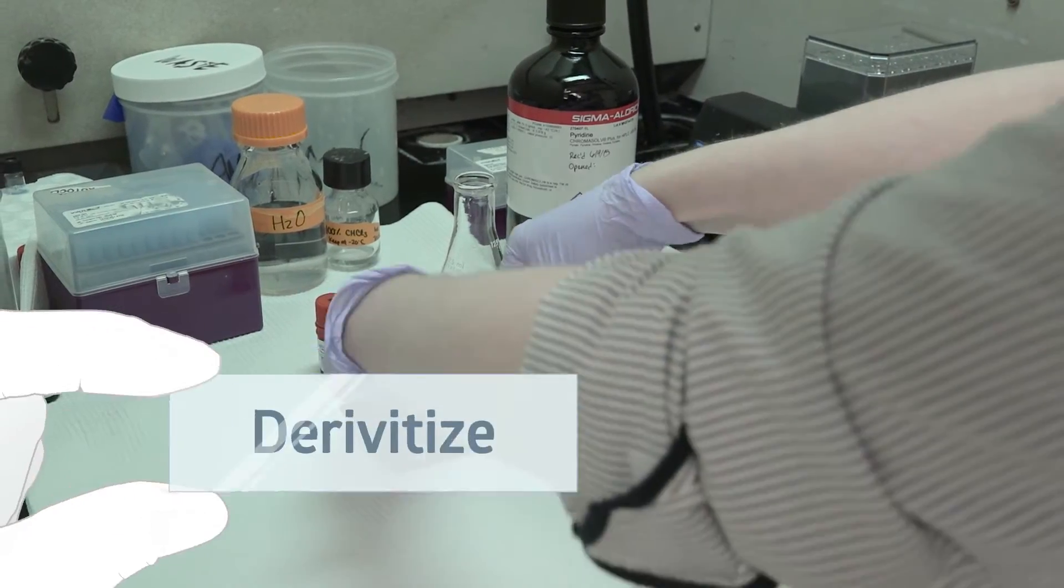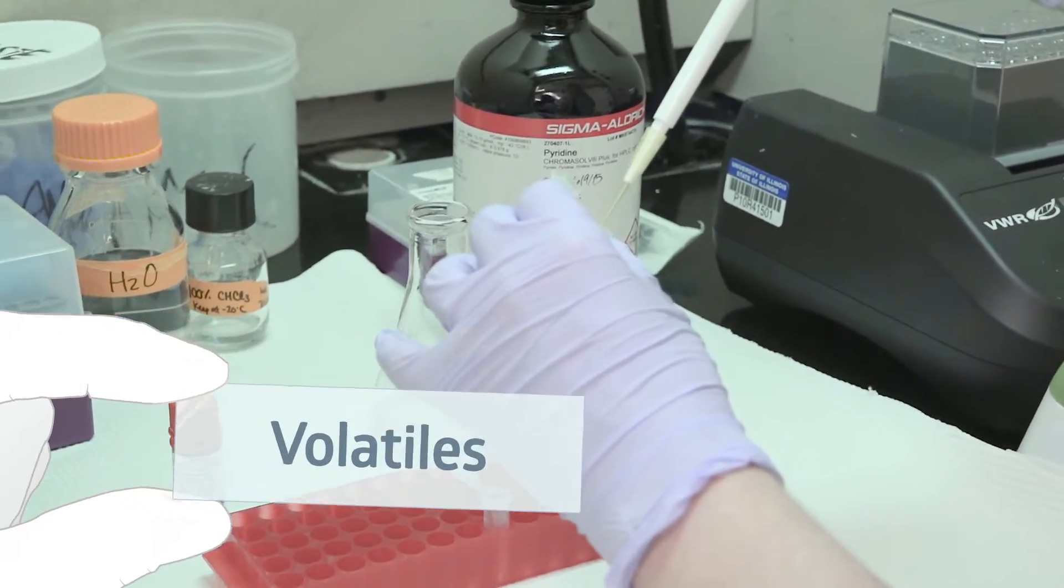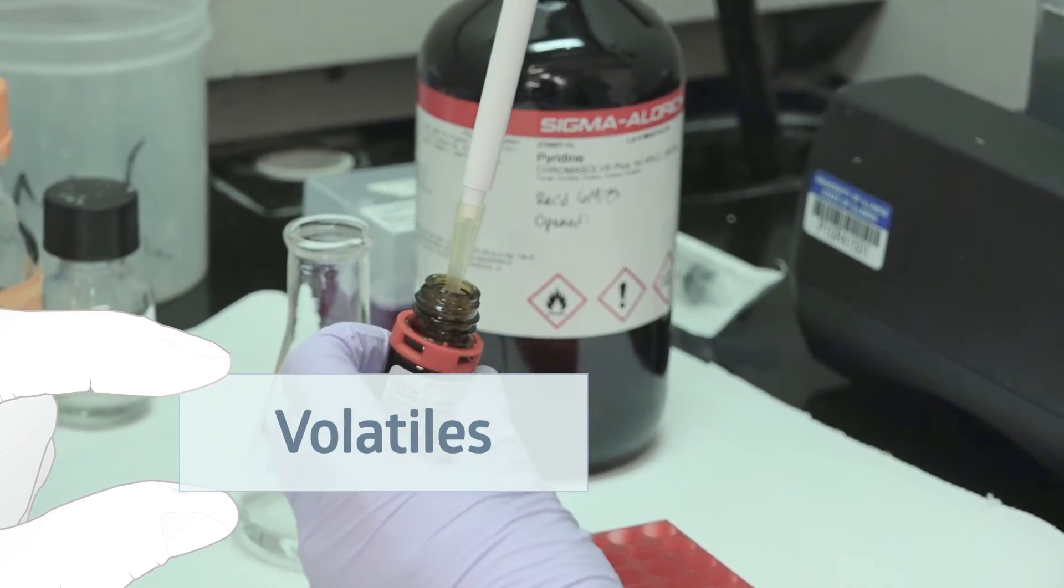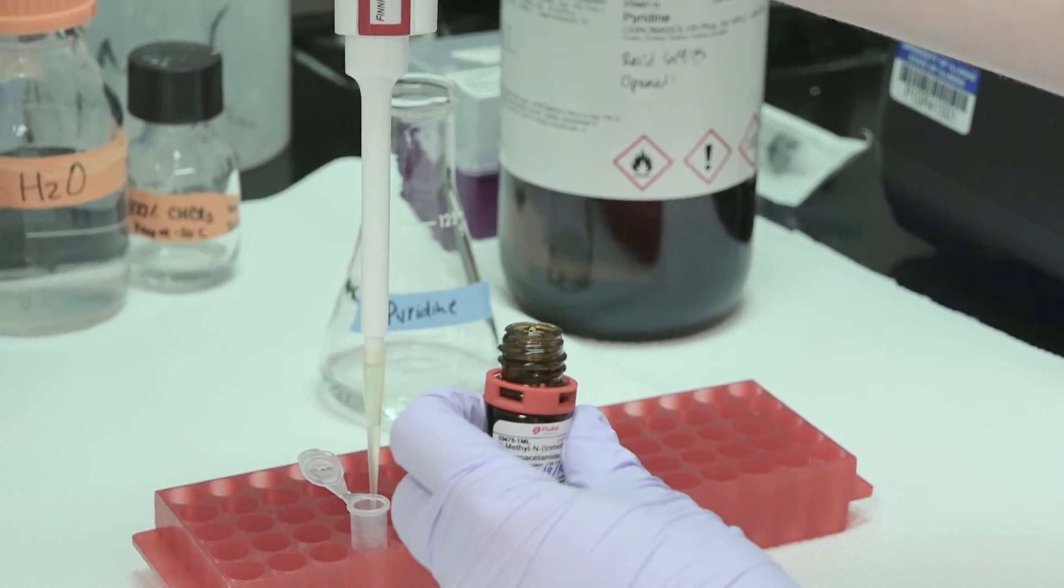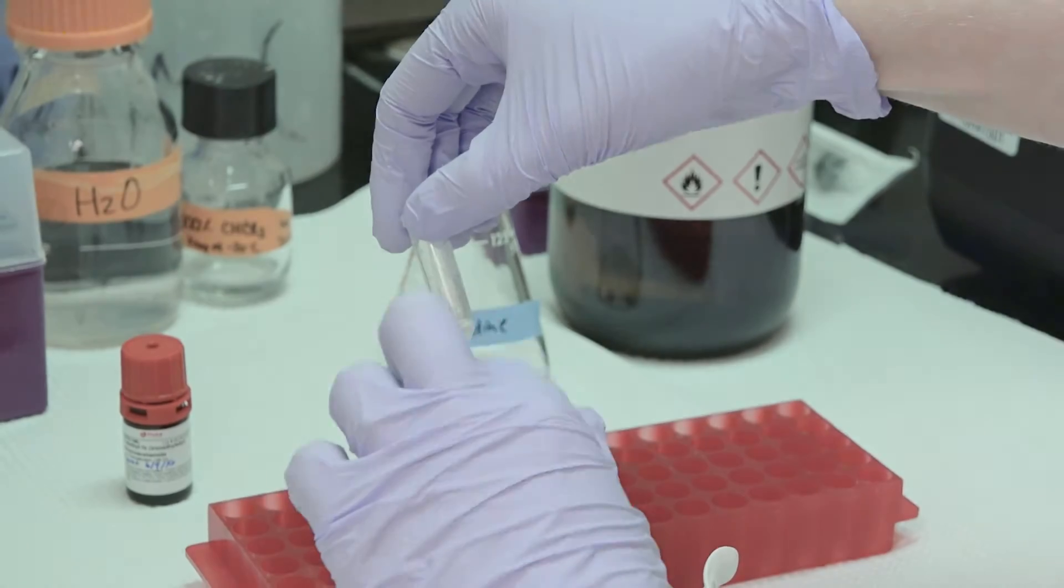So now we're going to derivatize these samples, which means to make the metabolites volatile. And volatiles are compounds that have no net charge, which is necessary for us to be able to run them through the GC-MS. So I'm going to add a couple of different chemicals, pyridine and MSTFA.